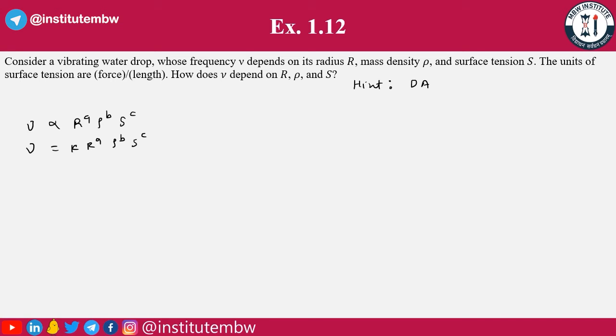We know that frequency is 1 upon t, that is time inverse, so it has dimension of t minus 1. That is the part of LHS. Now coming to the RHS: k is a constant so it doesn't have dimension, and r to the power a, that is radius, so it is L to the power a. Rho to the power b, that is density, so mass per unit volume, that is M L minus 3 to the power b. And S, force per unit length, so M L t minus 2 by L, so there will be no L in surface tension, so M t minus 2 to the power c.